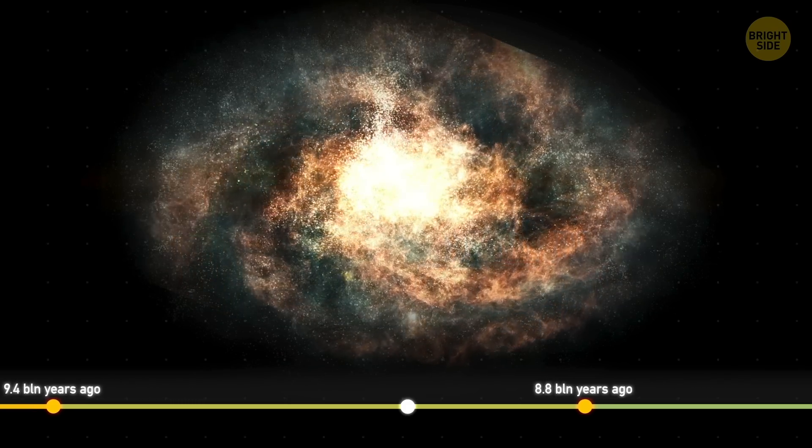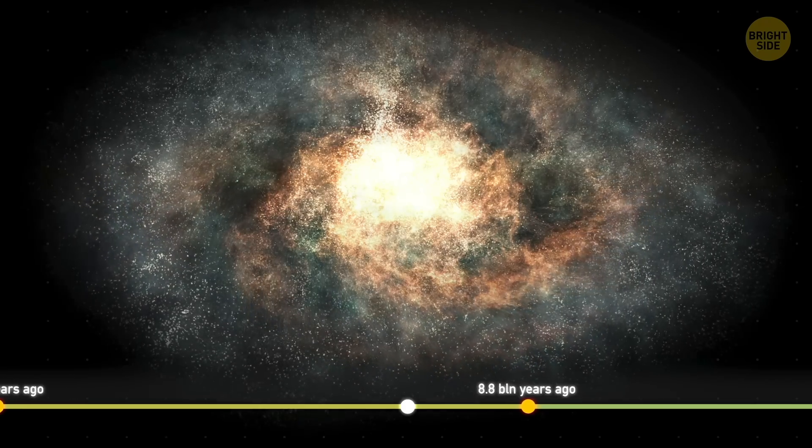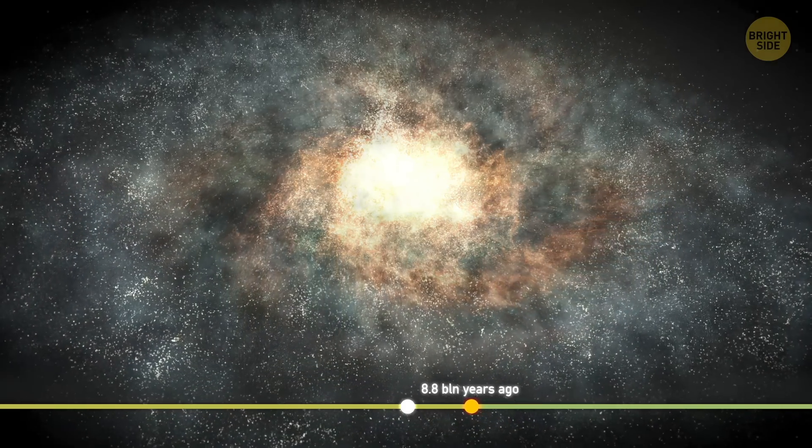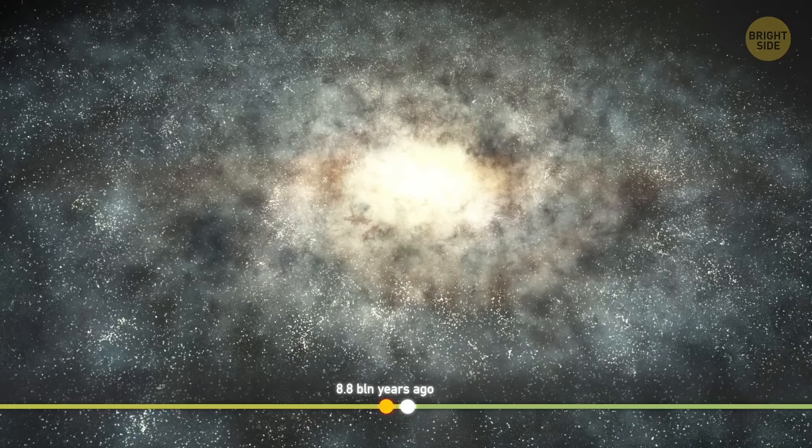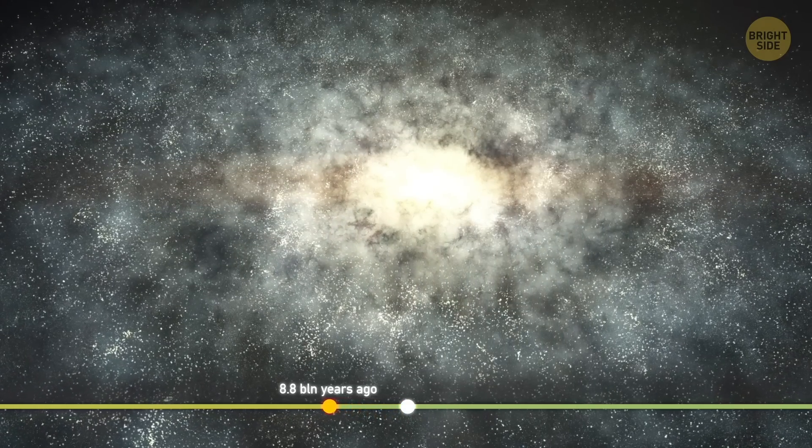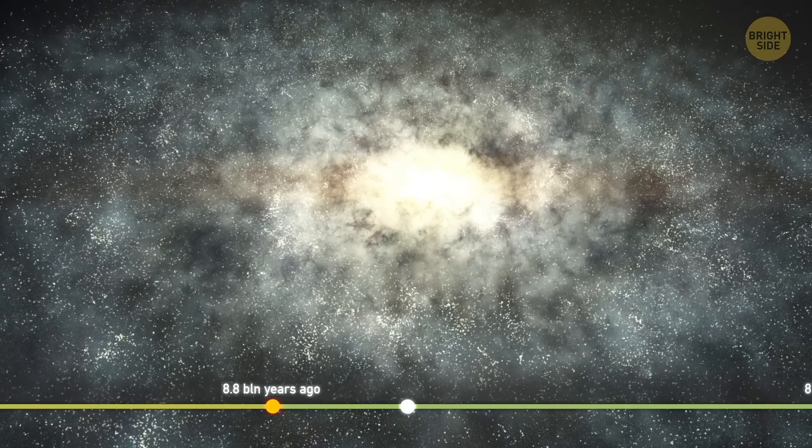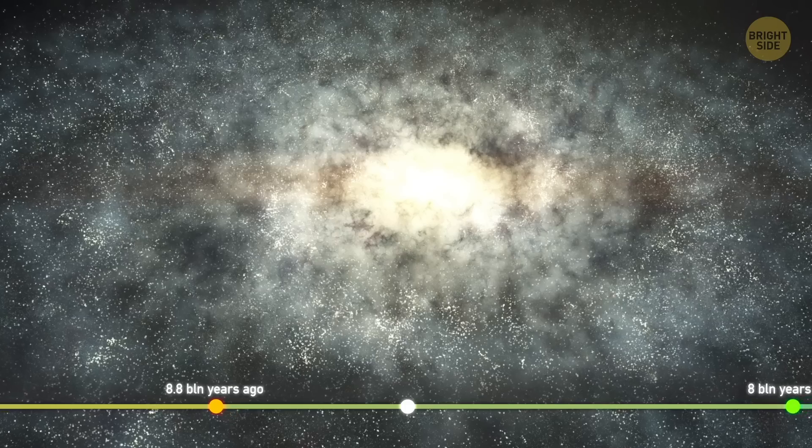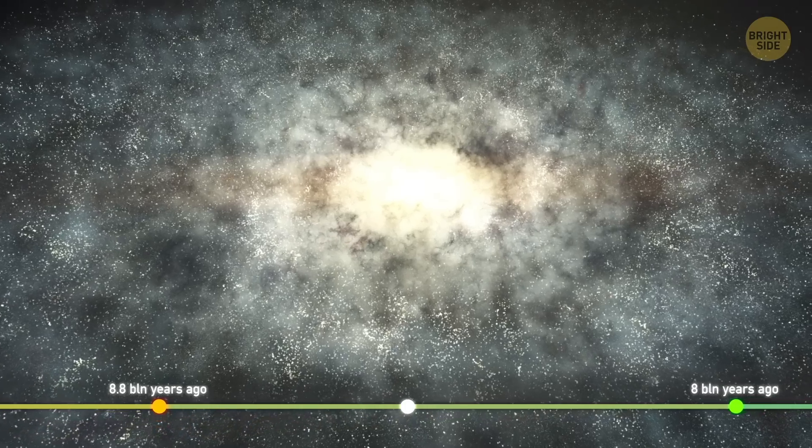As the universe continues to expand, the Milky Way goes on growing and taking the familiar shape. Until about 8.8 billion years ago, it had only its thick disk, a structure around the center, where older, gas-rich stars mostly dwell. Now, the thin disk starts forming.